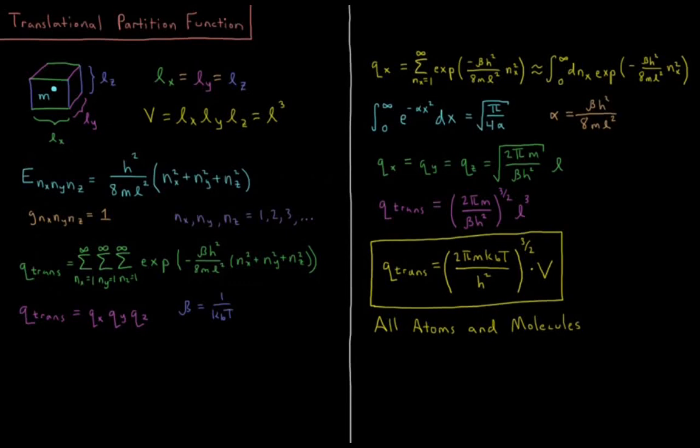This video will discuss the translational partition function of atoms and molecules in statistical mechanics. For atoms and molecules, they can all freely displace their location in x, in y, and in z in Cartesian space. We're going to use the energy levels that come out of quantum mechanics for the translations of molecules to build a partition function for translational motion.